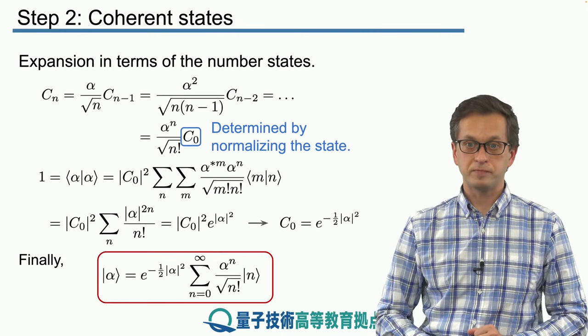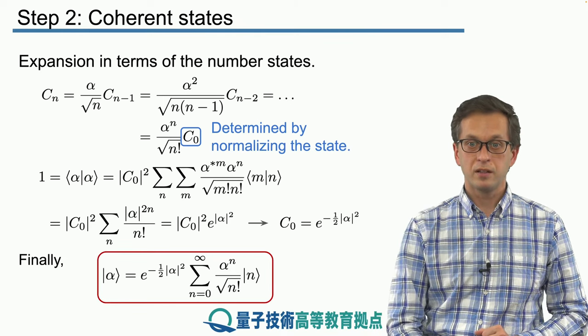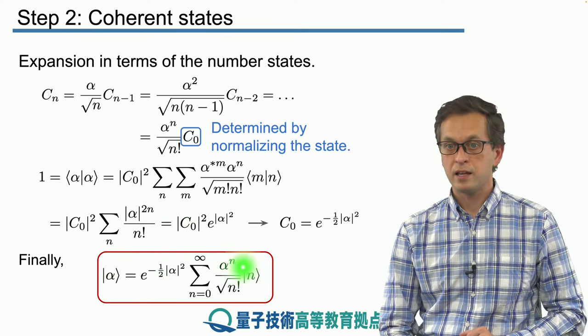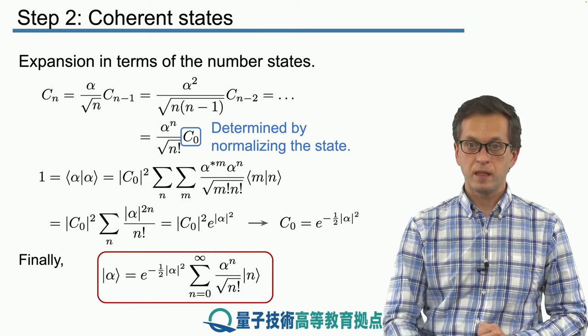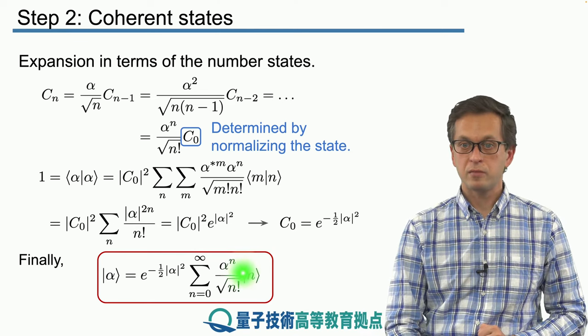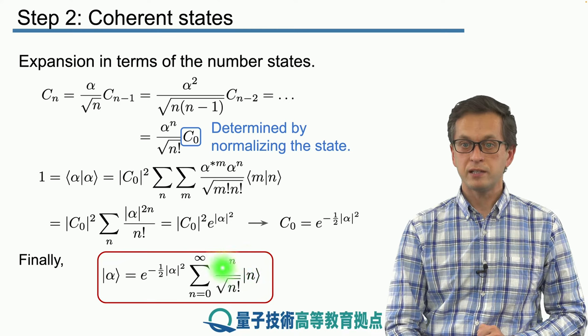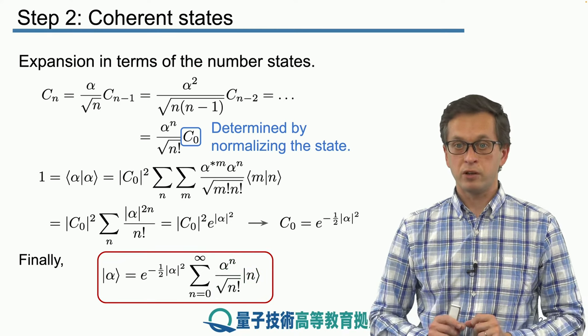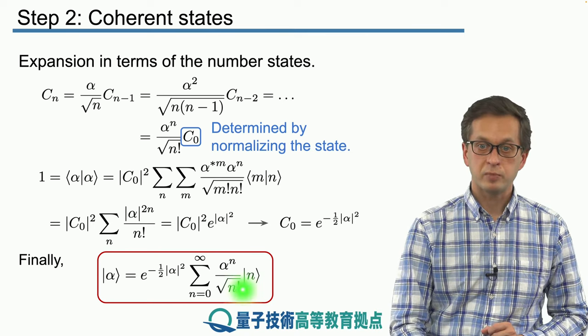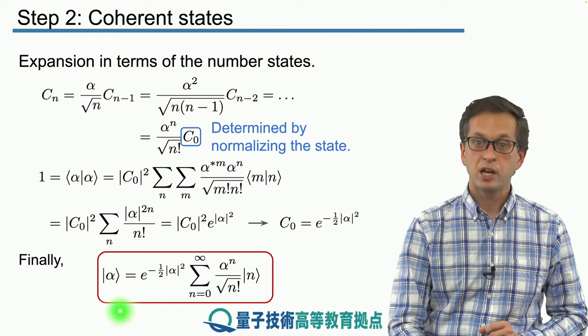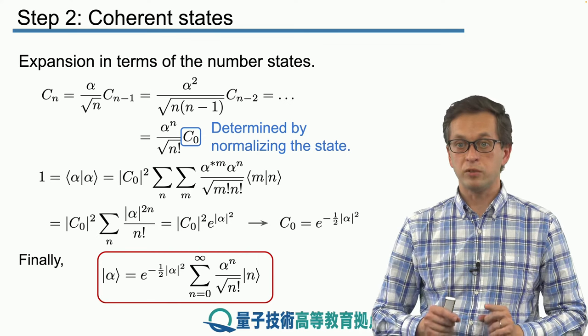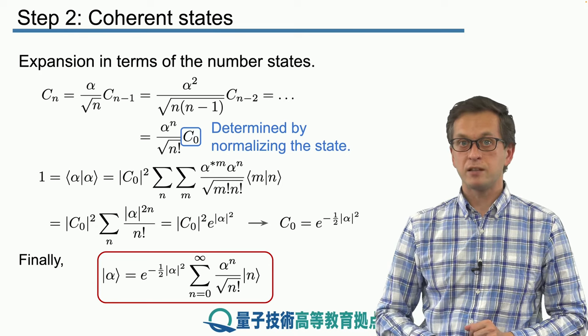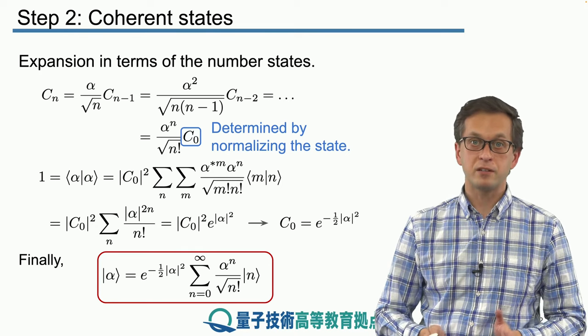It's the following. Our number state given by complex number alpha is this long expression. We have seen that these probability amplitudes which are inside the sum, which vary and depend on n, come from the recursion relation, while the exponential outside of the sum comes from the normalization condition. In the future step, we will explore what such a state tells us about the uncertainty relations.